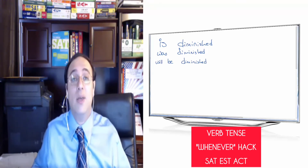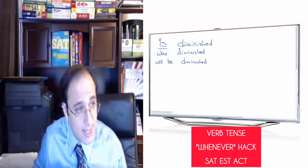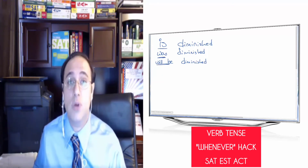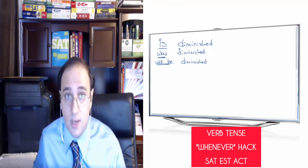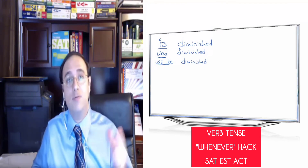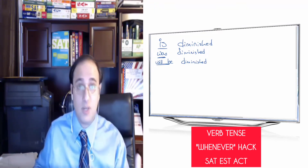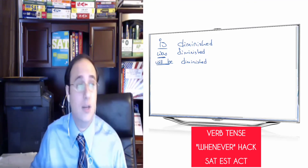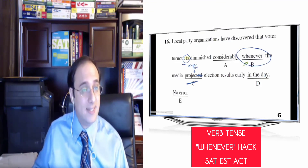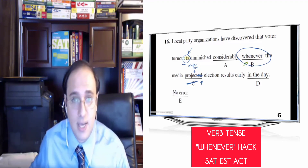So when I have verbs, the tense is always on the first verb. 'Is diminished' is present — the tense of the verb is always on the first verb. So here, 'is diminished' — 'is' is the present, so the projected form must also be present.